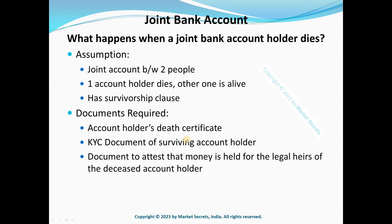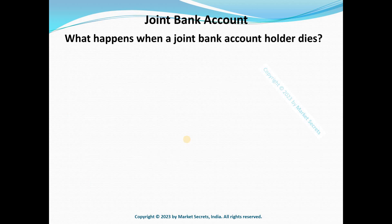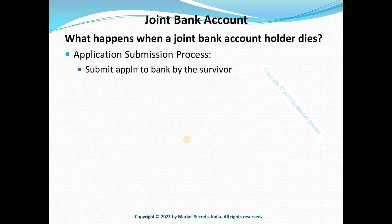Even though the surviving joint account holder automatically gets control of the joint account due to the survivorship clause, they are still liable to settle the money to the legal heirs. So you need to document and attest that you are holding that money for the legal heirs, and submit it along with all the other documents. Finally, you also need an application form or a letter to the bank stating the claim.